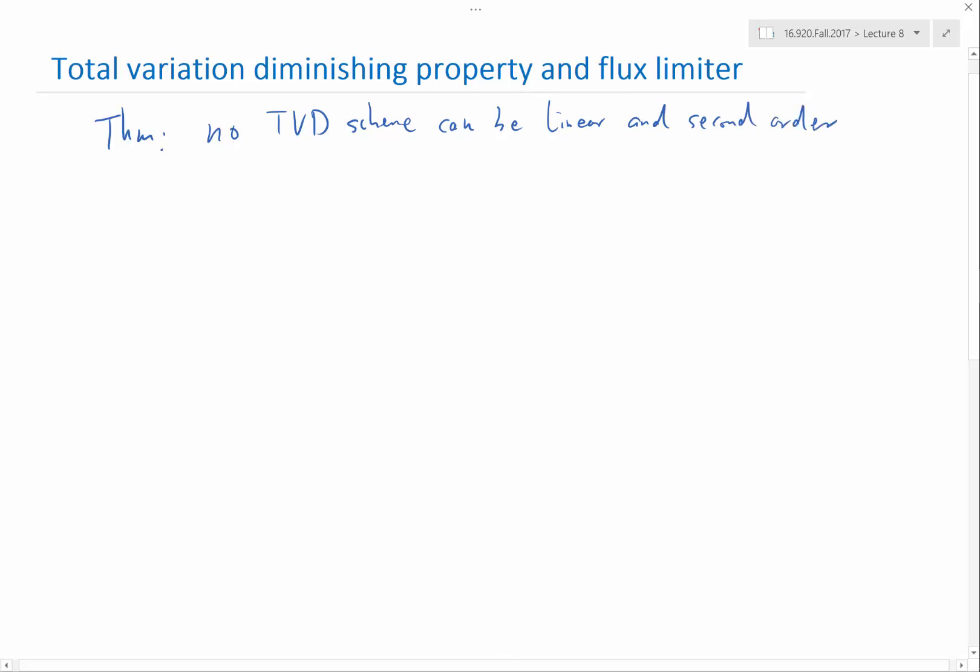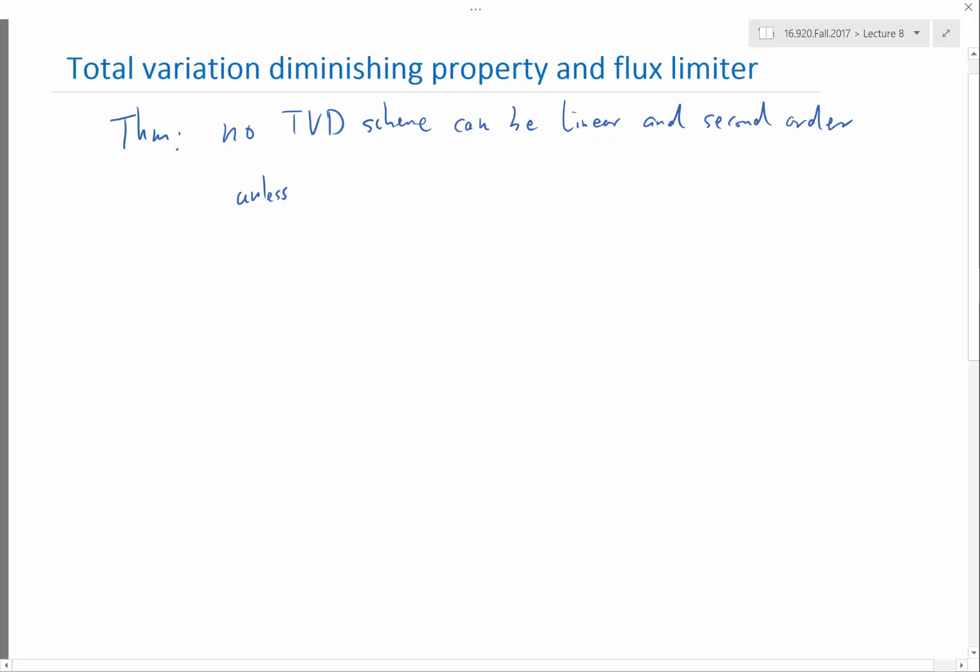There is unless the CFL number is an integer. So this unless is almost can be ignored because you can only achieve integer CFL number for linear equations where the advection speed, the characteristic speed, is a constant.